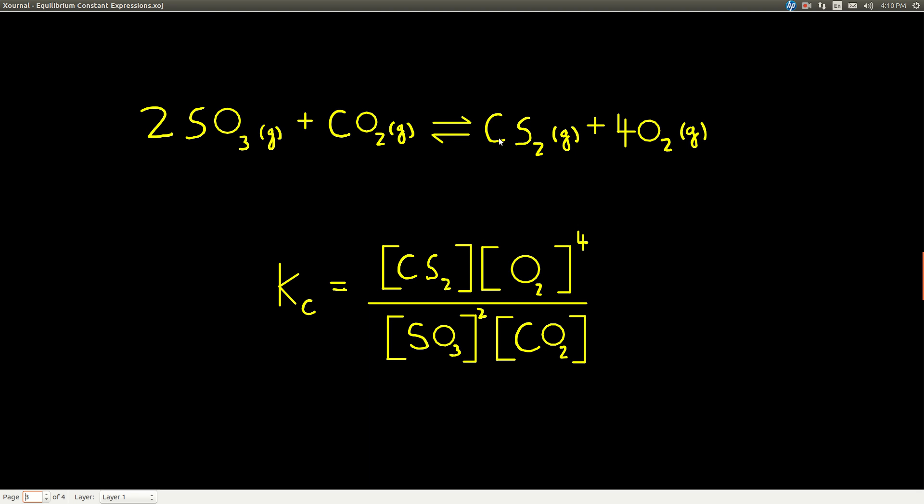So the products are carbon disulfide and oxygen. Now remember, we don't write ones if they're the coefficient or a superscript. So it'll be the constant on the top of the Kc, the products. We'd have the concentration of carbon disulfide to the first power, which we don't write, times concentration of oxygen to the fourth power. That's what this four is here. On the bottom, in the denominator of Kc, concentration of sulfur trioxide to the second power times the concentration of carbon dioxide to the first, which we don't write.